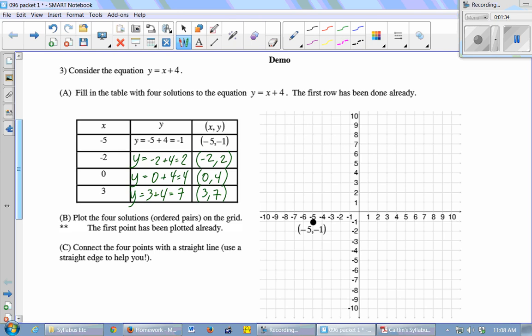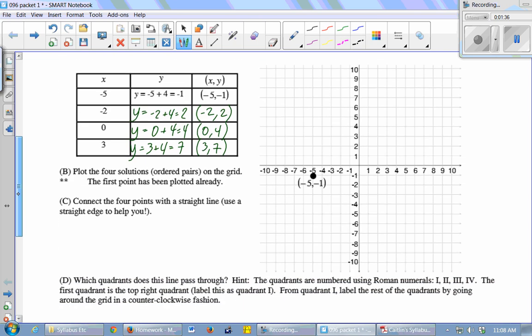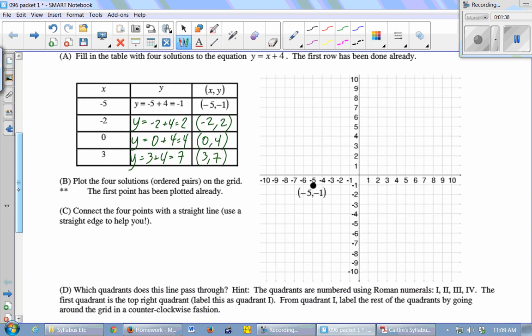I'm going to plot these four points, or ordered pairs, on the grid. The first one's already plotted, negative 5, negative 1. So remember when you're plotting points, the x always tells you left or right, and the y tells you up and down. So for negative 2 comma 2, we're going to go negative 2 on the x-axis, 2 on the y-axis, and plot our point.